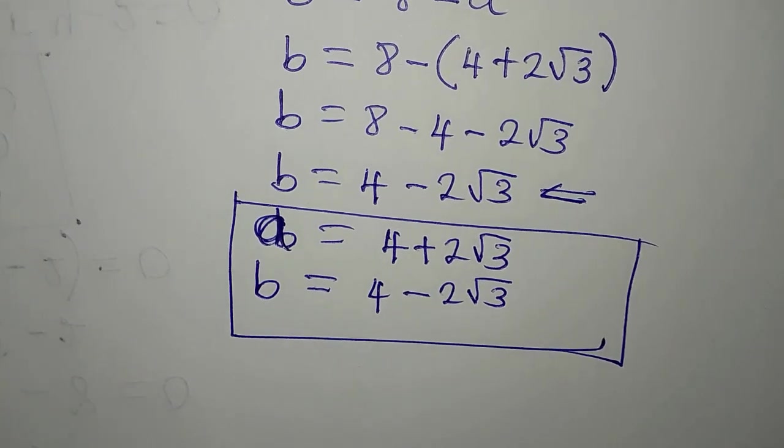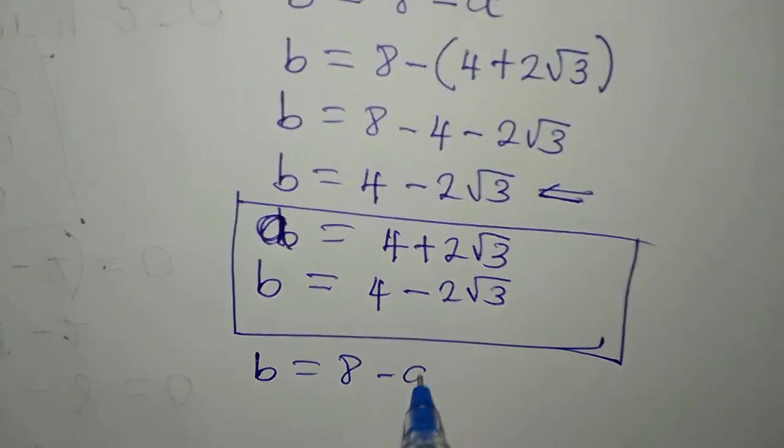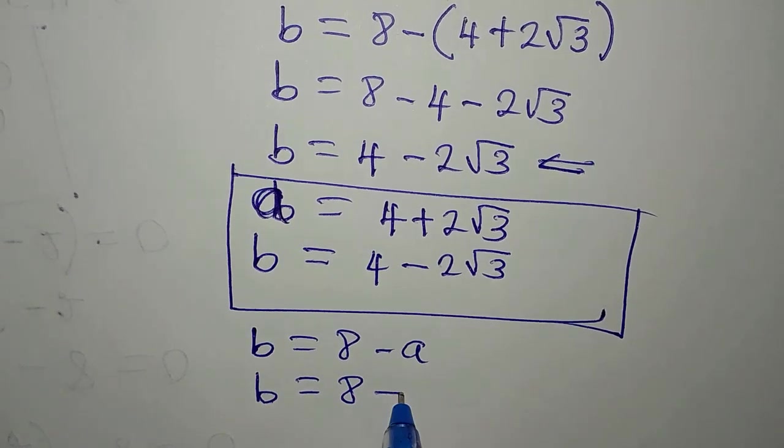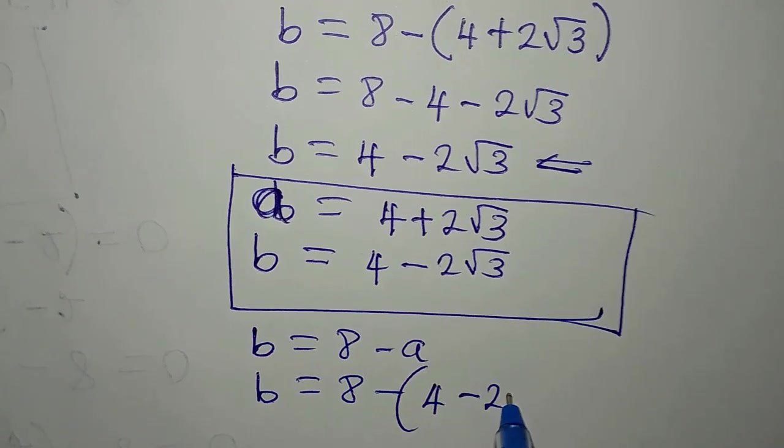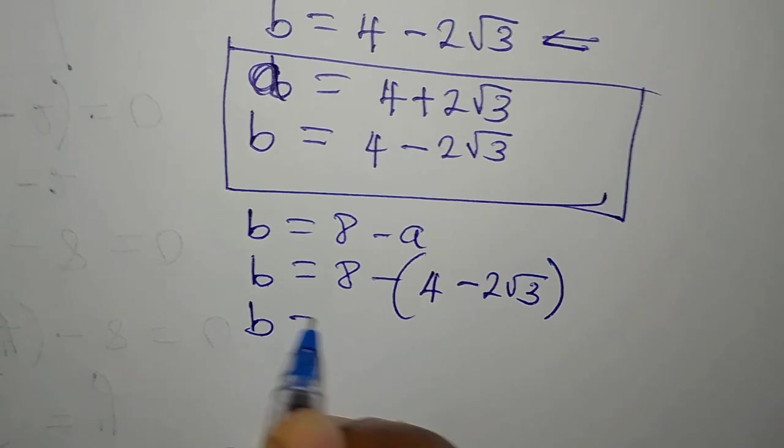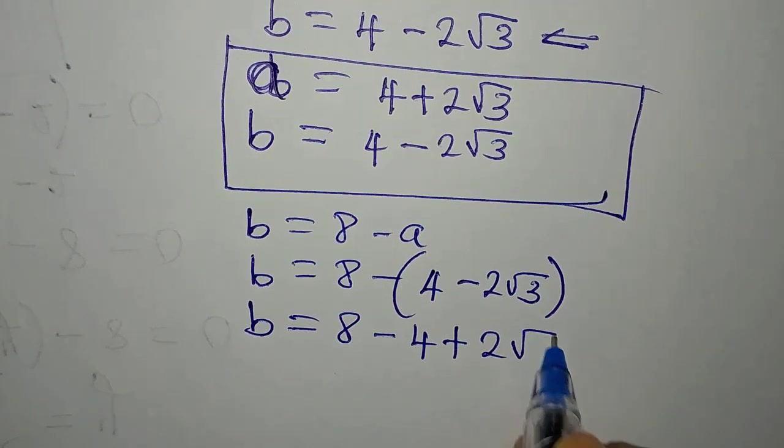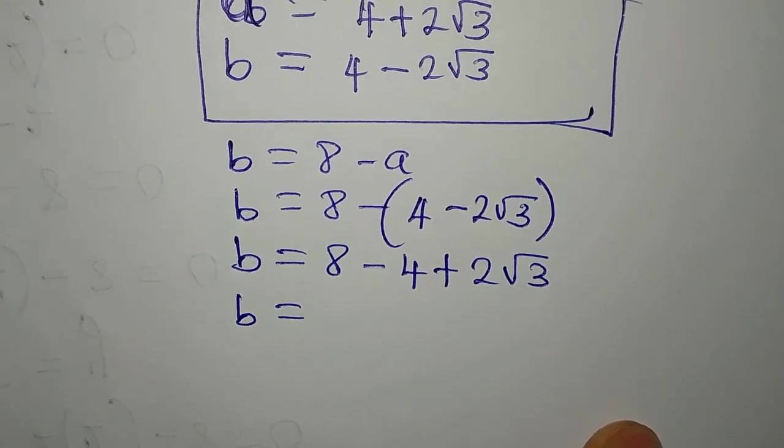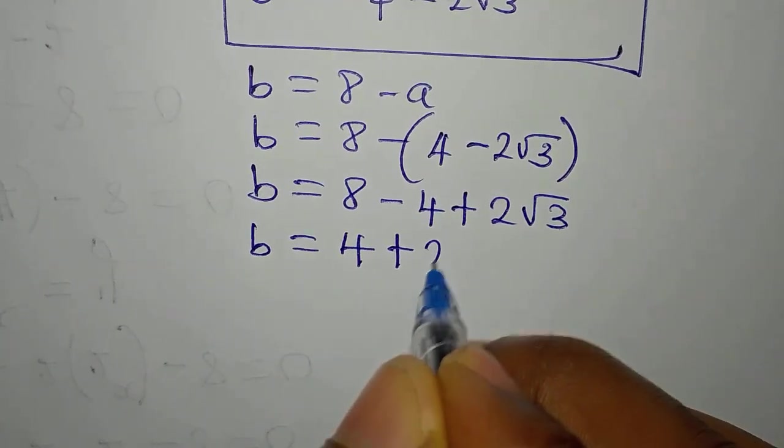Now, we will still get another value of B. Because we still have B to be equal to 8 minus A. And our B now will be equal to 8 minus open bracket. A, this time around, is 4 minus 2 root 3. We will open the bracket with a negative as we get B equals 8 minus 4 plus 2 root 3. Now, our B is equal to 8 minus 4. 8 minus 4 is 4, then plus 2 root 3.